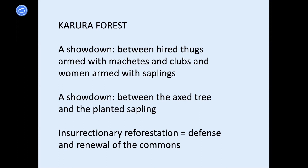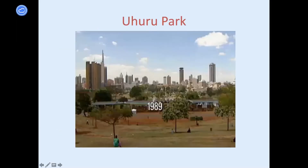There was a symbolic showdown between the axed tree and the planted sapling — unregulated destruction on one hand, and this biological and cultural investment in the future that the sapling represented. They talked about insurrectionary reforestation, a defense and renewal of the commons in Karura Forest. The second case study is the fate of Uhuru Park. You may have seen struggles around the world where a central plaza or park becomes a place authoritarian regimes want to build on — because that is where people can assemble. We've seen this in Turkey, Belarus, Hong Kong, and many other social struggles.